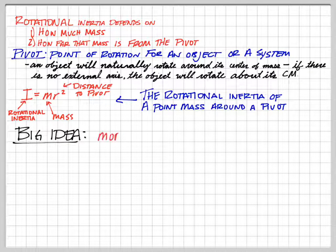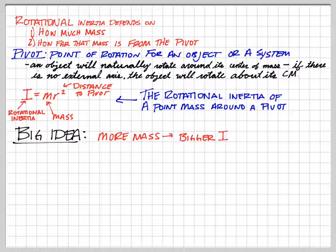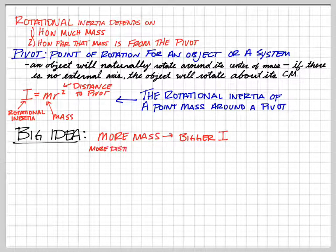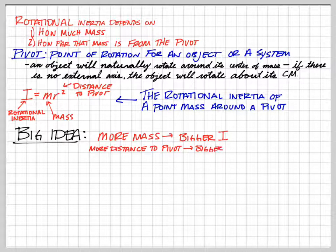The big idea to hold onto for moment of inertia: the more mass we have, the bigger our moment of inertia and the bigger our rotational inertia. The more distance, the farther away we are from the pivot, the bigger the rotational inertia we have. Less mass means less rotational inertia. Closer to the center of rotation means less rotational inertia.